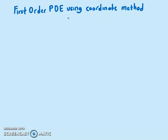Before we look at the coordinate method, let's look at what a first order PDE is all about. We have A·U_X plus B·U_Y plus C·U equals F. This is our first order PDE, and it can be solved using the characteristic method or the coordinate method.